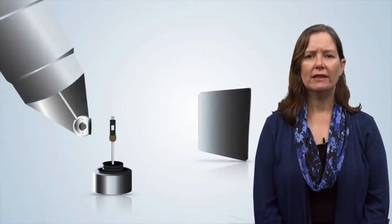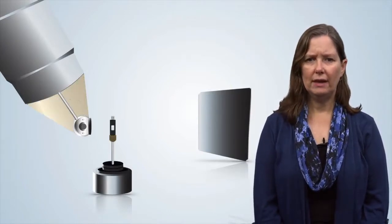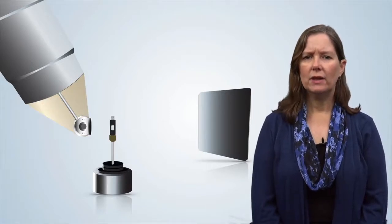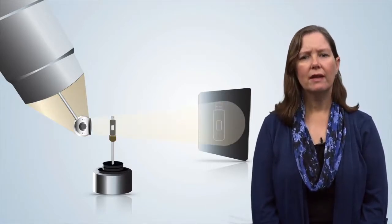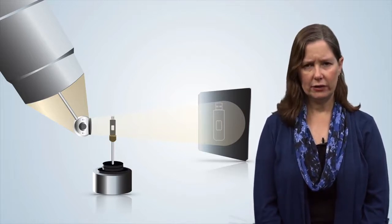The MicroCT generates x-rays by shooting electrons through a vacuum and hitting a tungsten target. These electrons interact with the tungsten to produce a cone of x-rays that shoot out toward the sample sitting on a central stage.